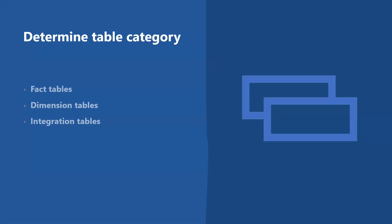Let's talk about determining table category. A star schema is a mature modeling approach widely adopted by relational data warehouses. It requires modelers to classify their model tables as either dimension or fact tables. A star schema organizes data into fact and dimension tables. Some tables are used for integration or staging data before it moves to a fact or dimension table. This decision informs the appropriate table structure and distribution.